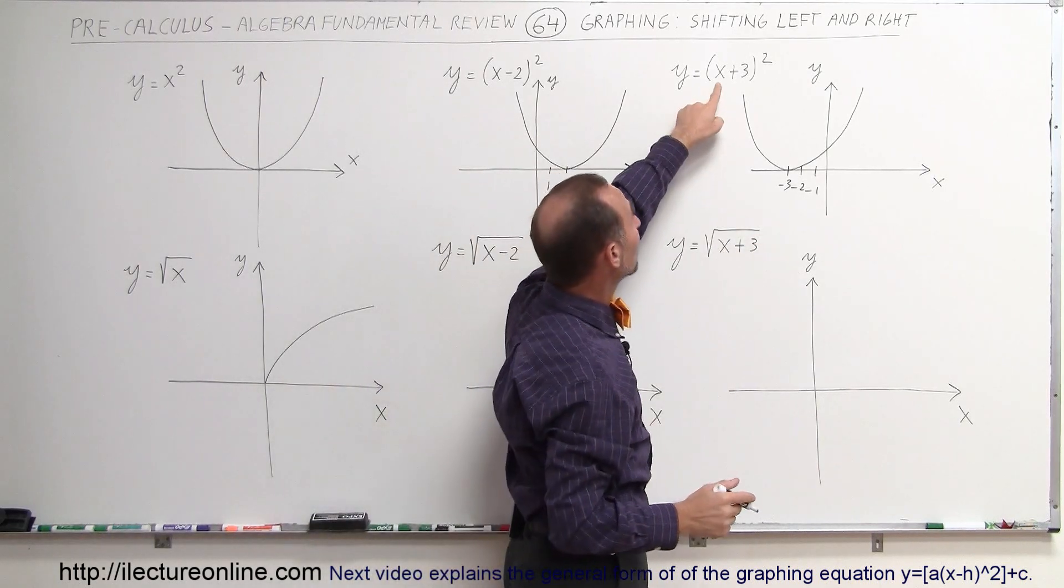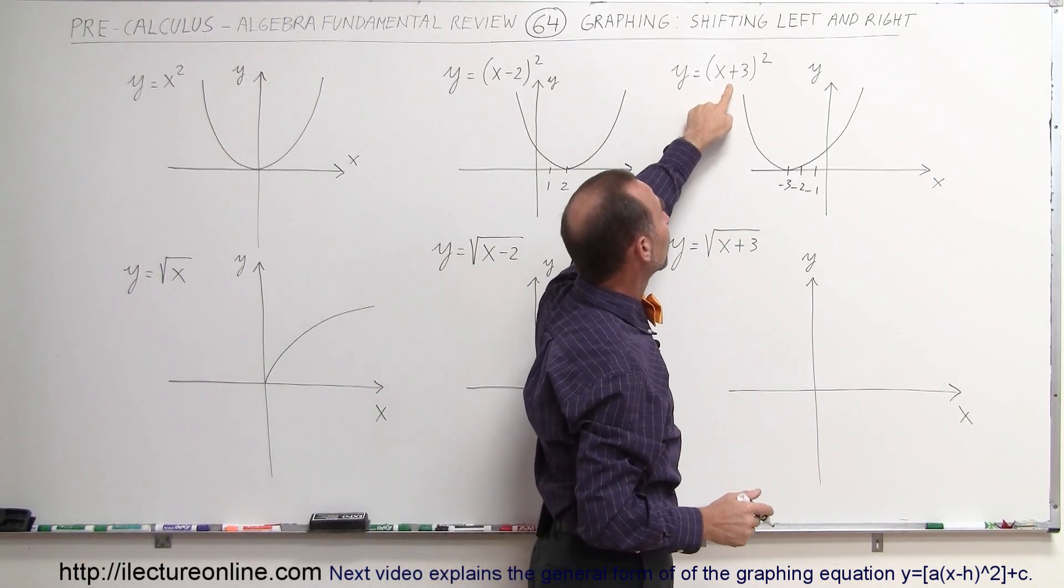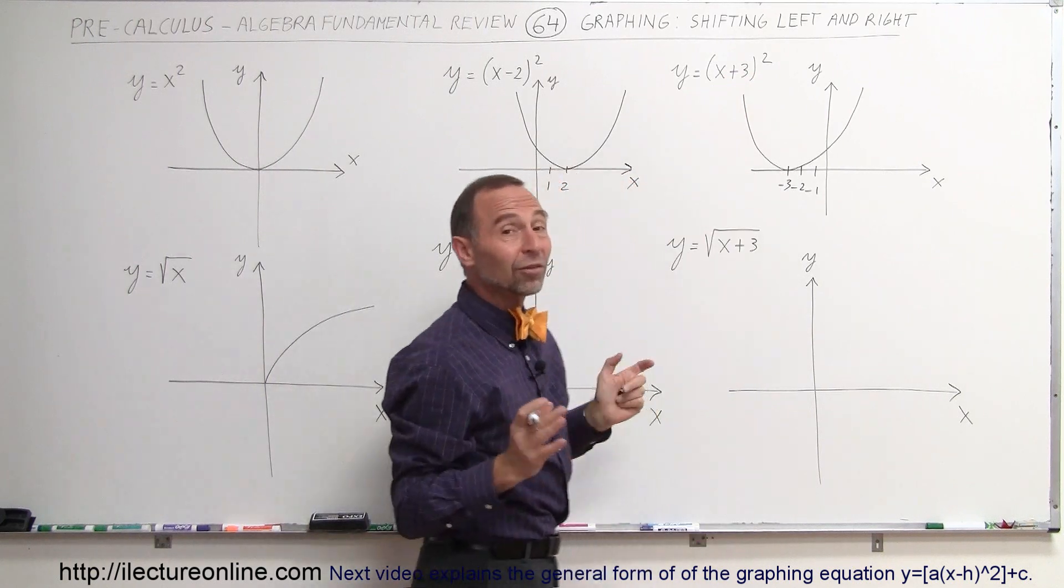Again, you can check if x equals negative 3. Negative 3 plus 3 is 0, 0 squared is 0, y will be 0 at that point. So it does seem to work.